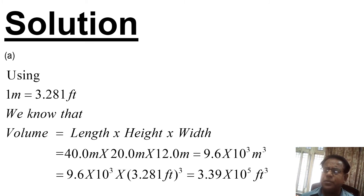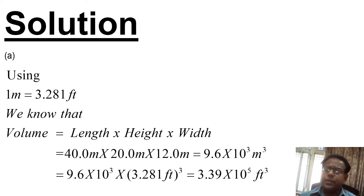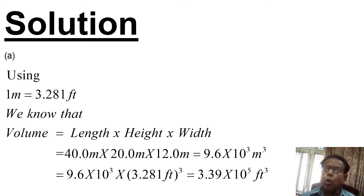This volume of 9.6 × 10³ cubic meters is alternatively equal to 9.6 × 10³ multiplied by (3.281 feet)³. We have applied the conversion factor: one meter equals 3.281 feet. The volume then becomes 3.39 × 10⁵ cubic feet.